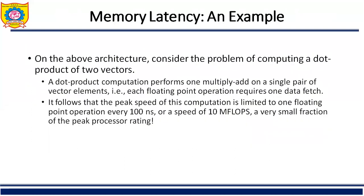On this architecture, consider the problem of computing the dot product of two vectors. A dot product computation performs one multiply-ADD on a single pair of vector elements, meaning each floating-point operation requires one data fetch. It follows that the peak speed of this computation is limited to one floating-point operation every 100 ns, or a speed of 10 Megaflops — a very small fraction of the peak processor rating.